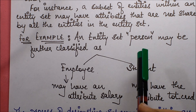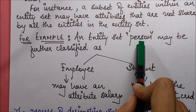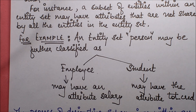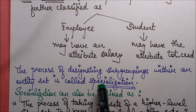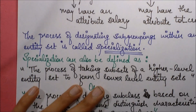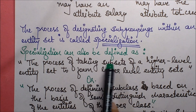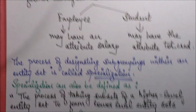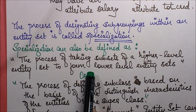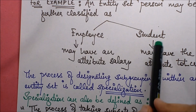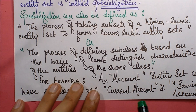In such a case, we can form two subgroupings of the entity set 'person': employee and student. That is the basic notion of specialization. Formally, specialization is the process of taking subsets of a higher-level entity set — in this case 'person' — to form lower-level entity sets, which are 'employee' and 'student'.